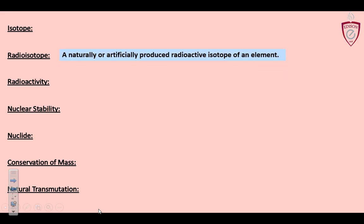Radioisotope. It's a naturally or artificially produced radioactive isotope of an element. Some elements are created radioactive at certain abundances. Those things are called radioisotopes. If it is radioactive and it is an isotope, it is a radioisotope.